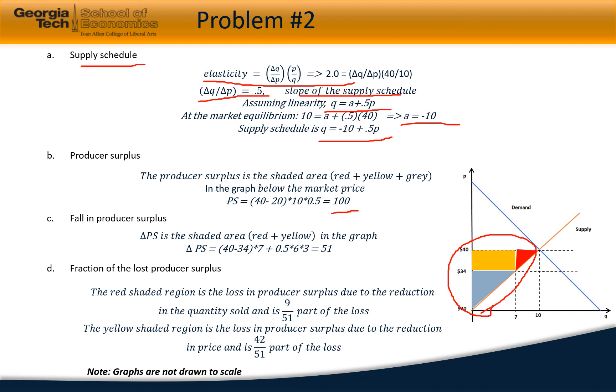Now what would be the fall in producer surplus if the price falls from $40 to $34? The price drop would cause the producer surplus to drop, which is graphically the red plus yellow region. The yellow region is the drop in producer surplus due to drop in price, and the red region is the drop in producer surplus due to less quantity consumed.